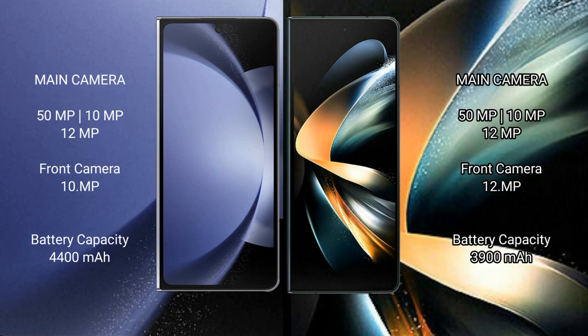Samsung Galaxy Z Fold 6 has a rear triple camera setup: 50MP plus 10MP plus 12MP, and a 10MP front camera. Samsung Galaxy Z Fold 4 also has a rear triple camera setup: 50MP plus 10MP plus 12MP, and a 10MP front camera.